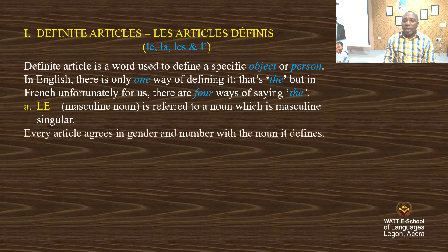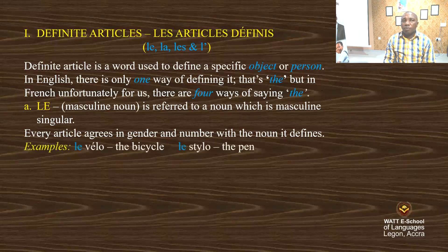Every article agrees in gender and number with the noun it defines. Examples: le vélo — the bicycle; le stylo — the pen.